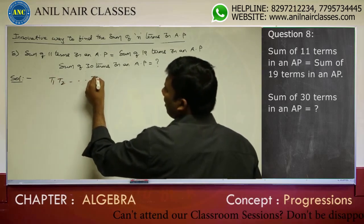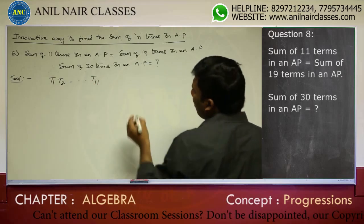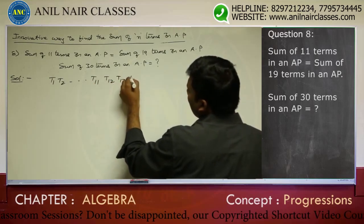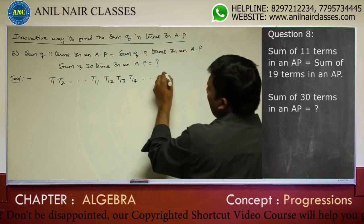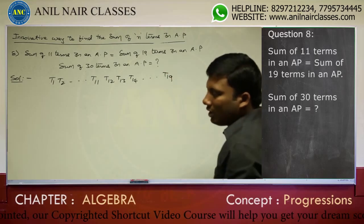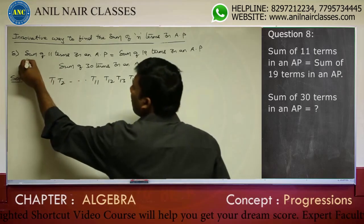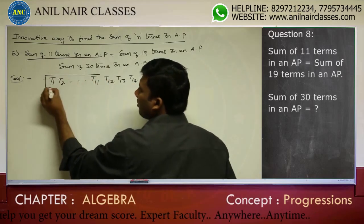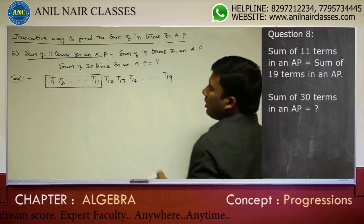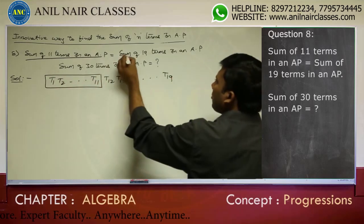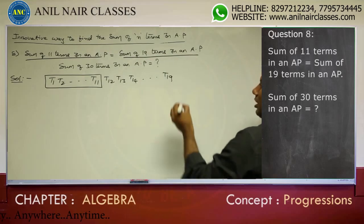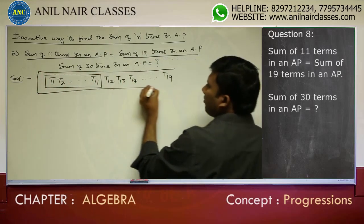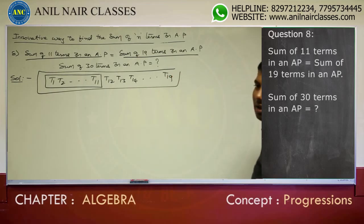The sum of 11 terms covers T1, T2, up to T11. The sum of 19 terms continues from T12, T13, T14 and so on up to T19. The sum of these 11 terms is equivalent to the sum of 19 terms in an arithmetic progression — that is, the entire sum of those 19 terms.